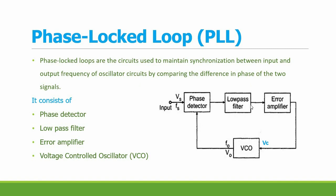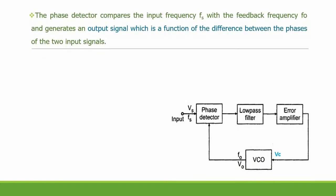In short, we call the voltage controlled oscillator as VCO. The incoming signal is mentioned as VS and the frequency of the incoming input signal is mentioned as FS. The output of the error amplifier is the input to the VCO, which we call the control voltage VC. The output voltage of the VCO is called the free running voltage, with frequency called the free running frequency, denoted as F naught.